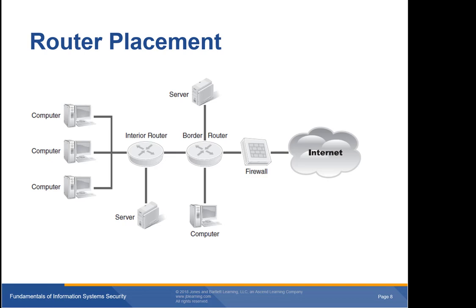The placement of a router within the network architecture affects configuration choices. You can place routers in two basic locations. A border router is subject to direct attack from an outside source. When you configure any router, you should determine whether it is the only point of defense or one part of a multi-layered defense system. A multi-layered defense is far better and more secure. Internal routers can provide enhanced features and help keep subnet traffic separate.